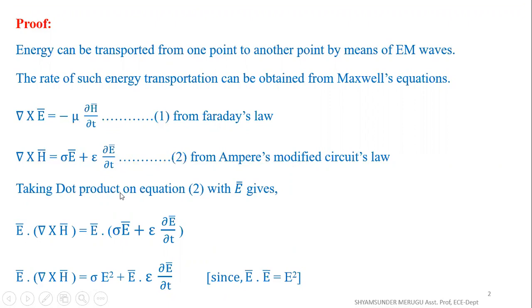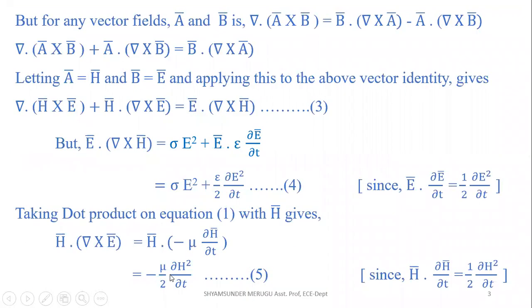Taking the dot product of equation 2 with E̅ gives us E̅ · (∇ × H̅) = σ E̅ · E̅ + ε ∂E̅/∂t, which simplifies to E̅ · (∇ × H̅) = σ E² + E̅ · ε ∂E̅/∂t.